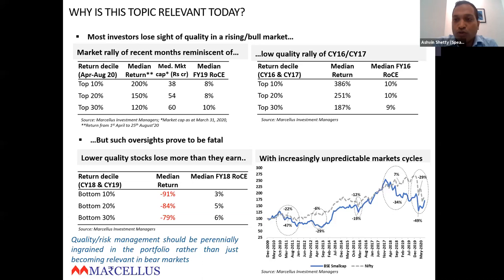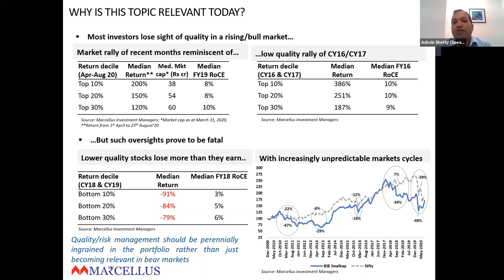Quality should always be foremost — whether in an up market or a down market. At Marcellus, we never invest in stocks from a quarterly perspective. We look to hold stocks forever, or at a minimum two to three years. In that period, anything can happen — markets can be up and down. Hence, we look at quality stocks and we strongly believe in quality.